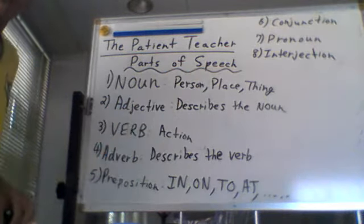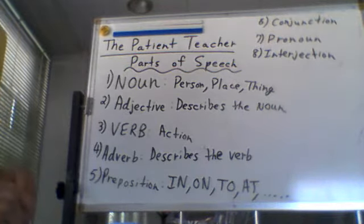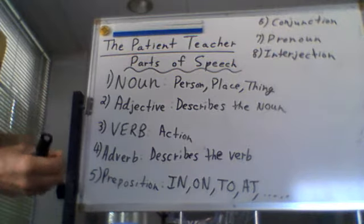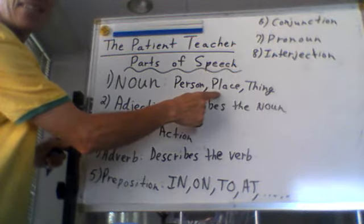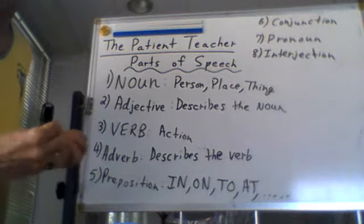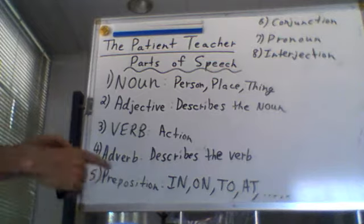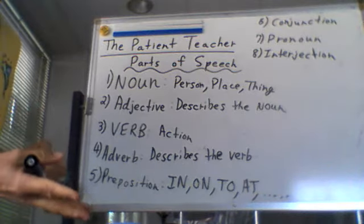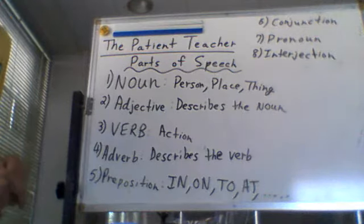Today we're going to learn the parts of speech. Speech refers to talking; parts are the different types of words we use. The first one is called a noun. A noun refers to a person, a place, or a thing. Person meaning people — it can refer to mother or a specific person. Place could mean a city, a country, a neighborhood, or the ocean, the beach.